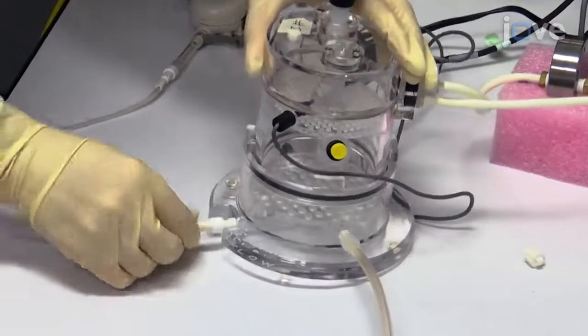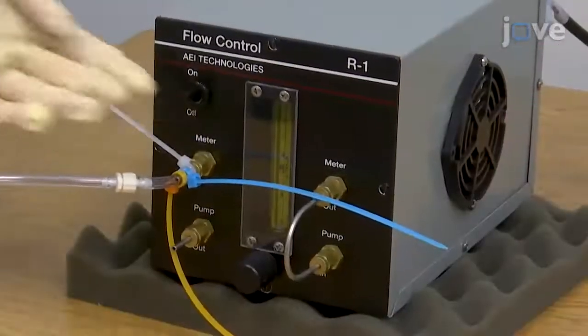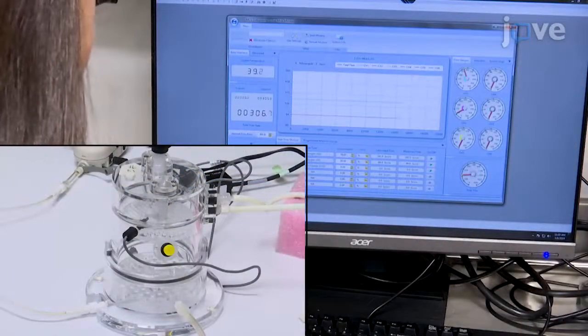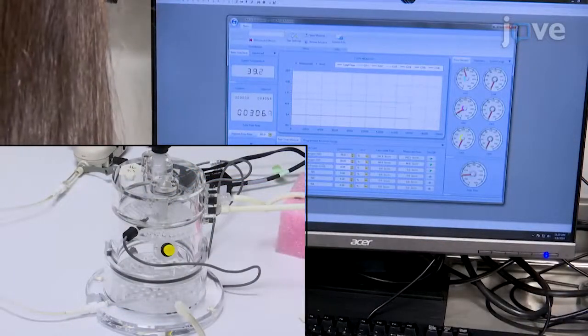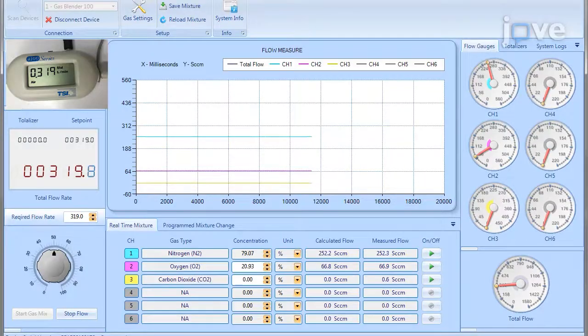Then reattach the inflow tube and turn on vacuum flow to calibrate the high flow and to allow 20.93% oxygen-balanced nitrogen gas to flow through the barometric plethysmography chamber from the gas mixer.